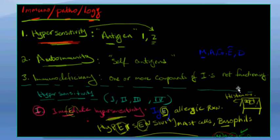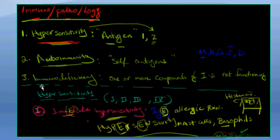So either our body is going crazy — which is hypersensitivity — for no reason, or our immune system is attacking itself, like taking a knife and stabbing yourself. Or immunodeficiency, which is the opposite of hypersensitivity: one or more components of your immune system is weak. Let's talk about number one, hypersensitivity.